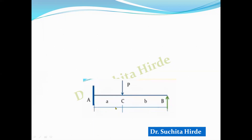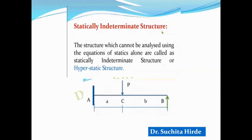Such a structure is called a statically indeterminate structure — one which cannot be analyzed using the equations of statics alone. These structures are also called hyperstatic structures. To analyze such structures, we need special methods like the moment distribution method, Kani's method, the stiffness matrix method, or the flexibility matrix method. We cannot analyze indeterminate structures using equations of equilibrium alone.